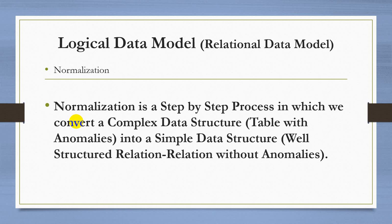A table that has anomalies can be dangerous for the database — it will be redundant and will not allow us to insert, delete, or modify data properly. What we do is normalize the table, meaning the table with anomalies is converted into a table that has no anomalies, so you can easily insert, modify, and delete data.